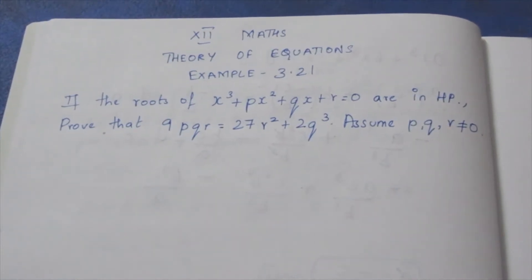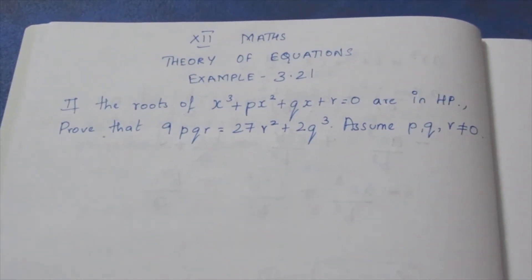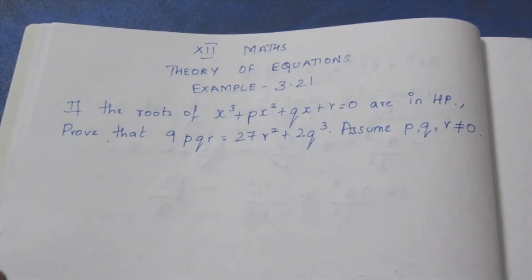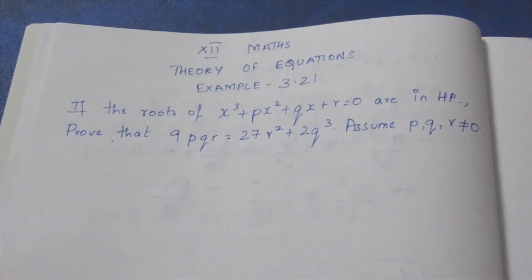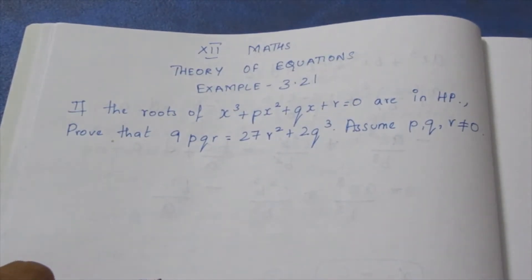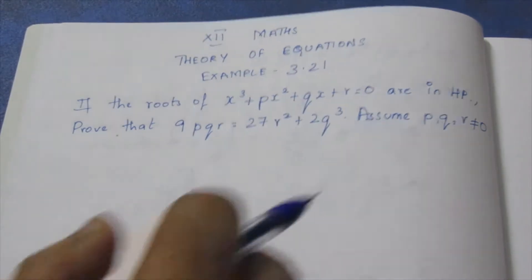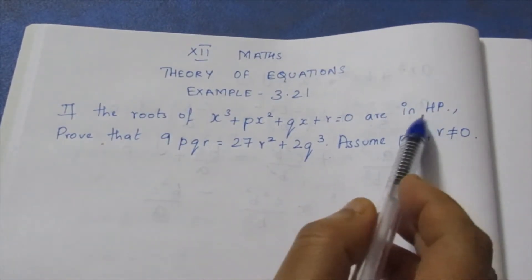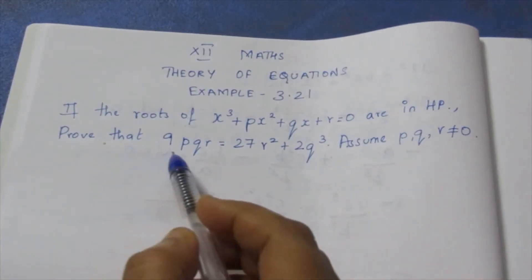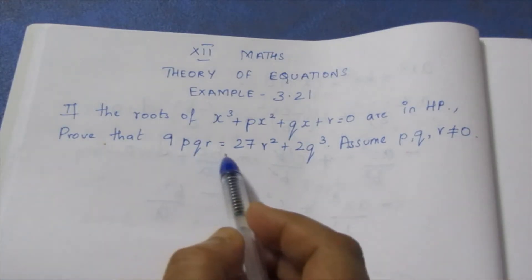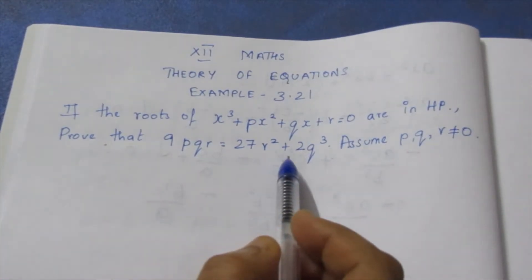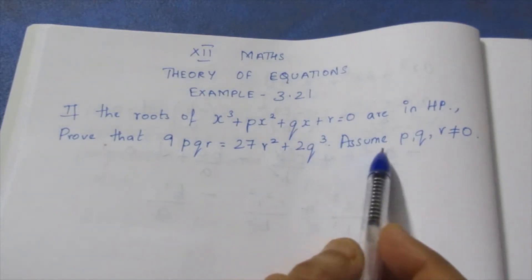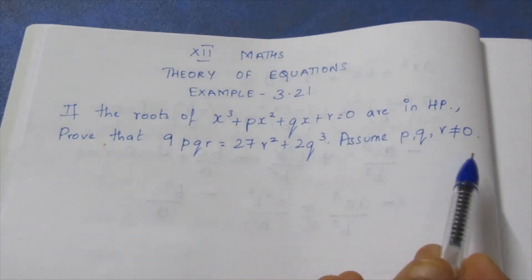Hello viewers, I am Ikely. In 12th Max Theory of Equations, Example 3.21. If the roots of x³ + px² + qx + r are in harmonic progression, prove that 9pqr = 27r² + 2q³. Assume p, q, r are not equal to 0.